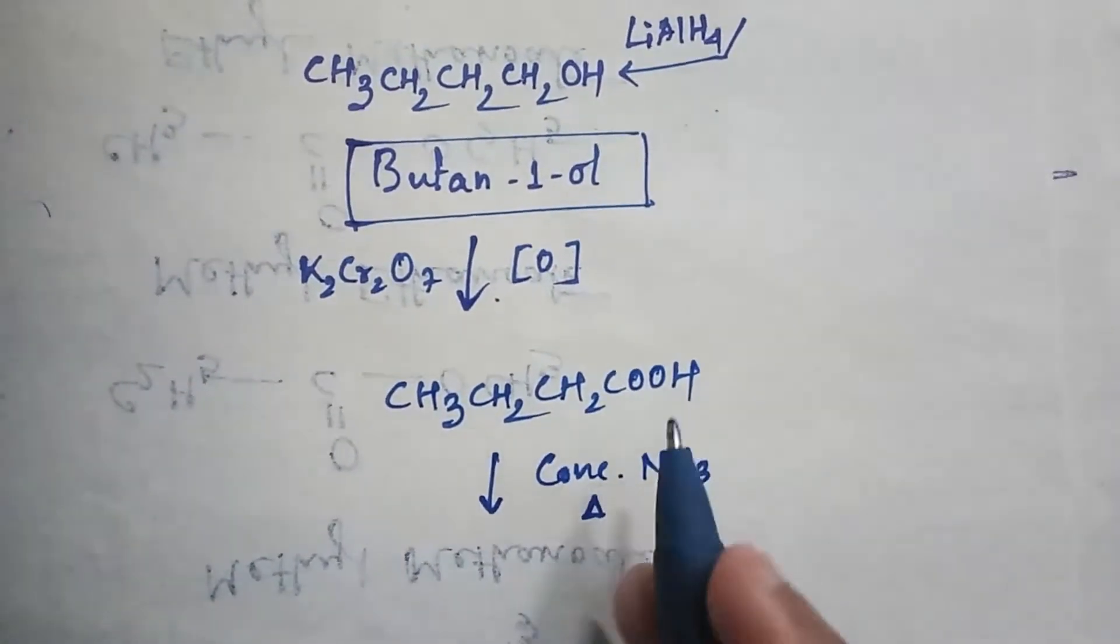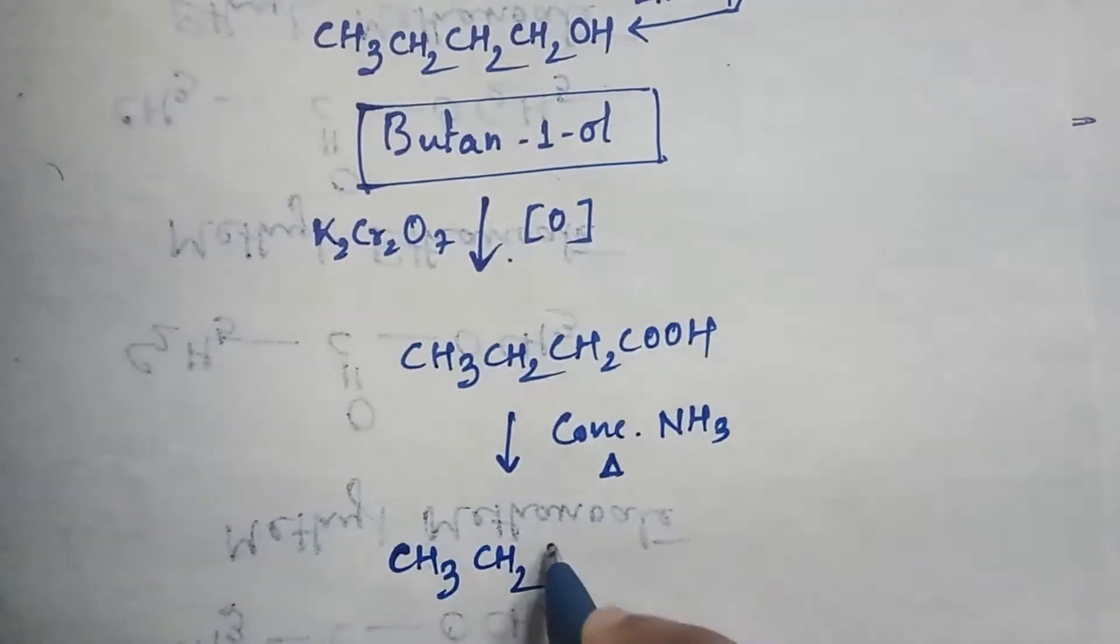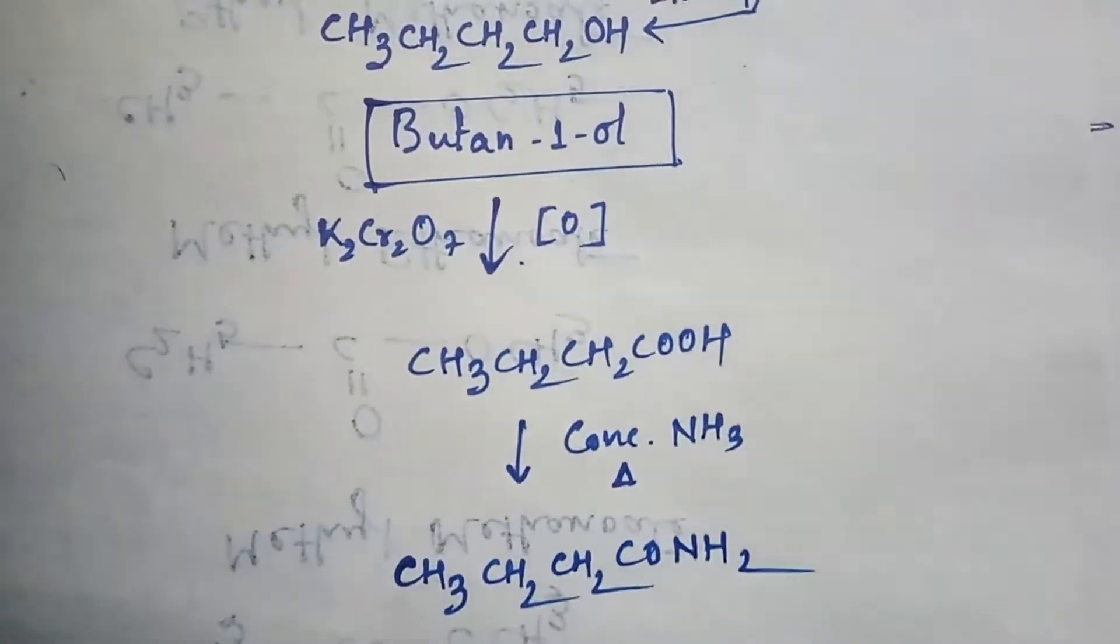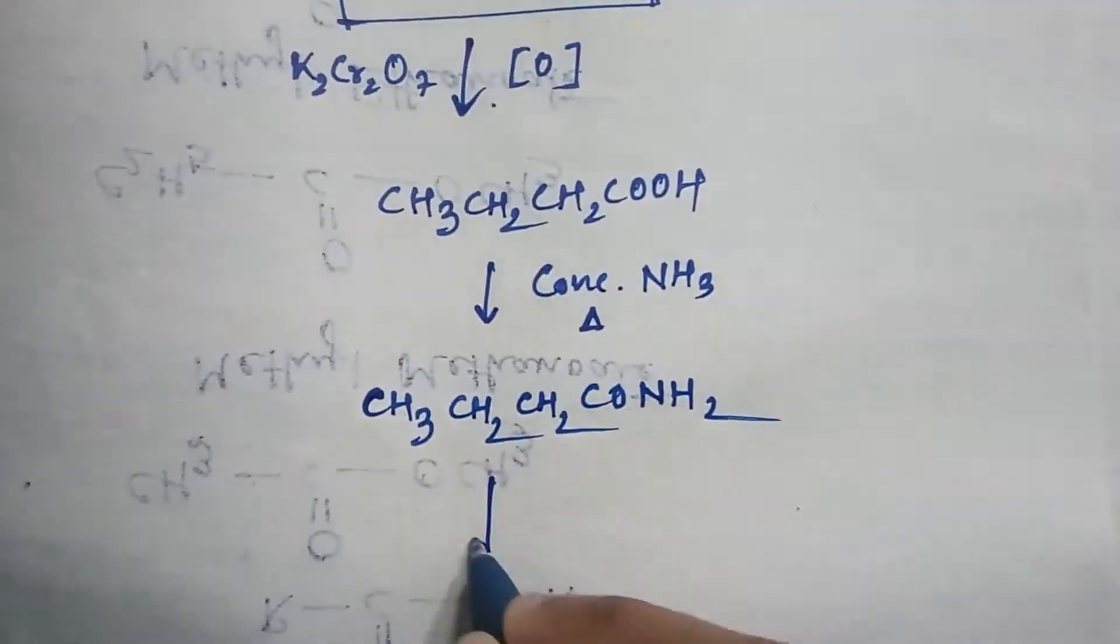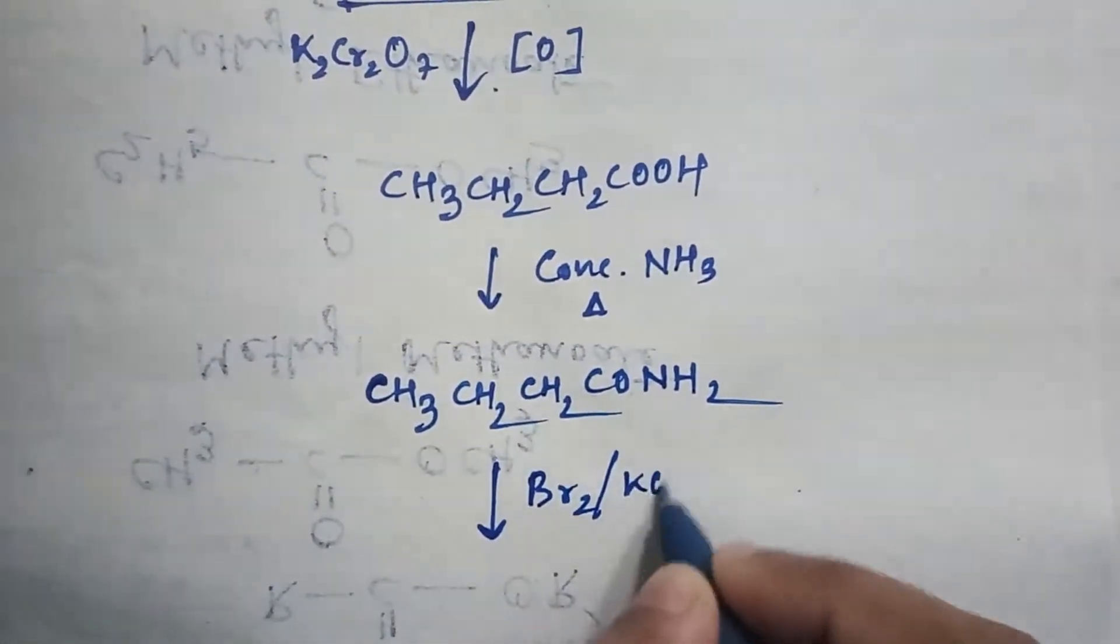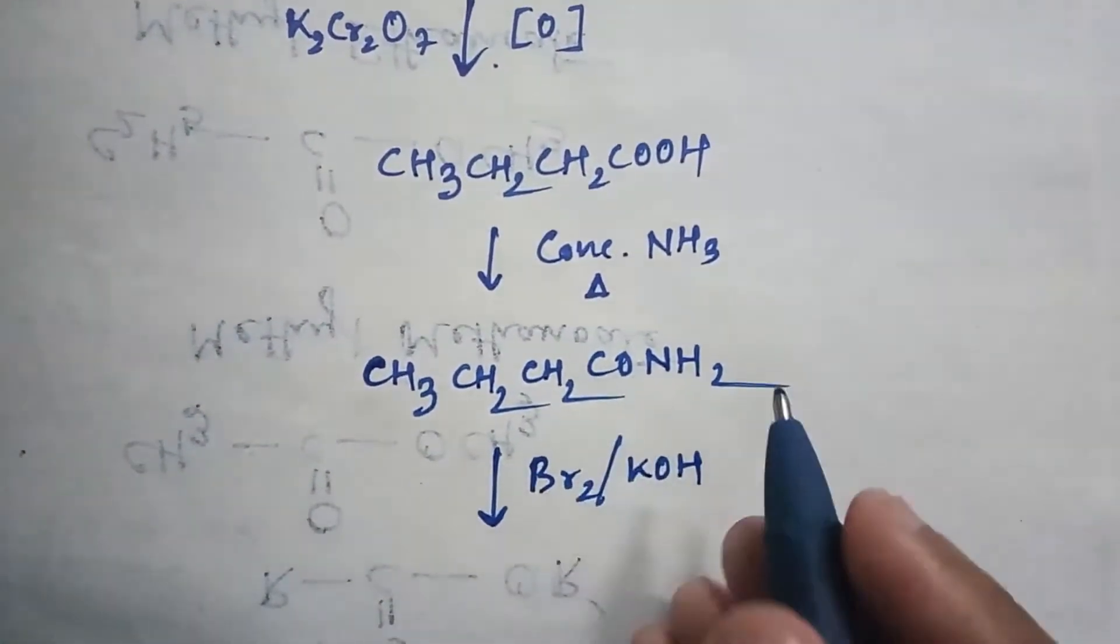The product will be CH3-CH2-CH2-CONH2. Now if you do Hofmann bromide reaction by using bromine and potassium hydroxide, then this CO group will be removed and you will get amine.